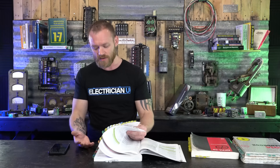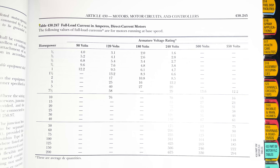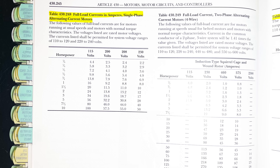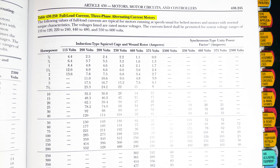I'm not going to go through every single one, but in the 430s for motors — 430.247, 248, 249, and 250 — I would highlight at least the three-phase alternating current and the single-phase alternating current tables because you're going to use those quite a bit.